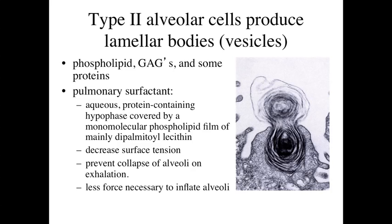However, type 2 alveolar cells are still very important because they produce lamellar bodies or vesicles containing phospholipids, glycosaminoglycans, and proteins. These are the cells responsible for producing pulmonary surfactant. Surfactant produces a protein covering that is very aqueous and has the effect of decreasing surface tension — similar to what detergent does when washing dishes, reducing surface tension to break up materials and keep things relatively lax.